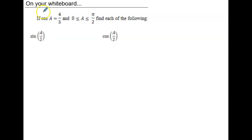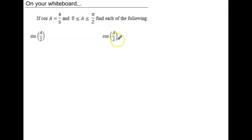Welcome back. On scrap paper or on your whiteboard, find the sine of a over 2, given that the cosine of a is 4 fifths and a is between 0 and pi over 2 inclusive. Then find the cosine of a over 2 with the same given information using your half angle identities. When you're ready to go over the answers, resume the video and we'll work through them together.